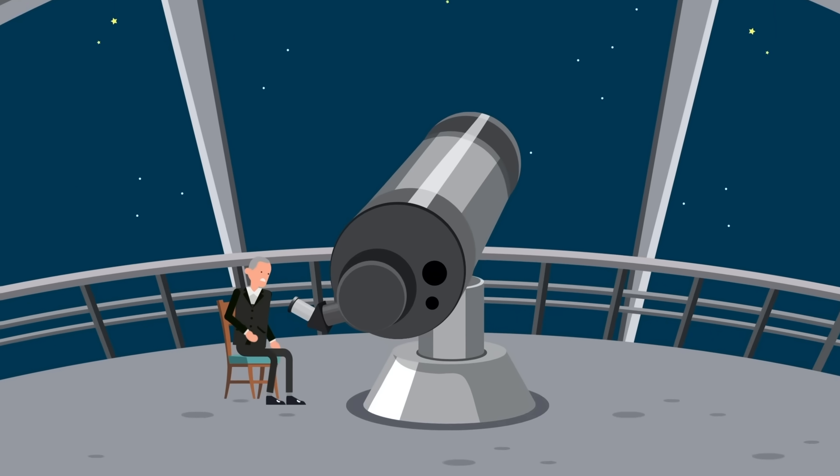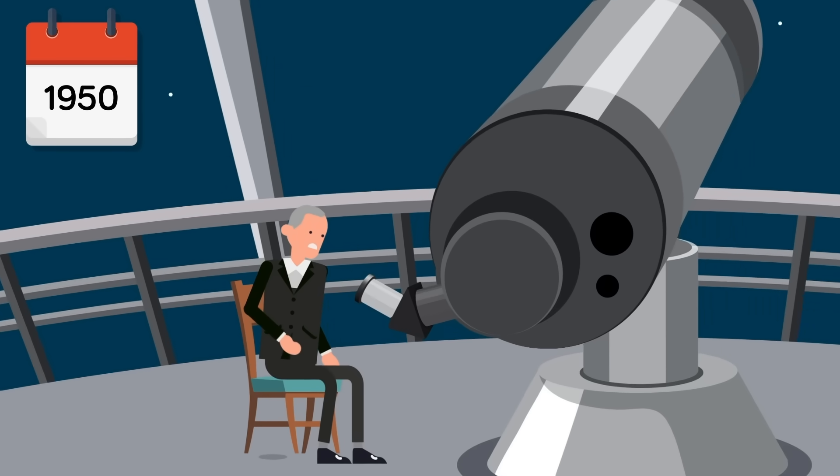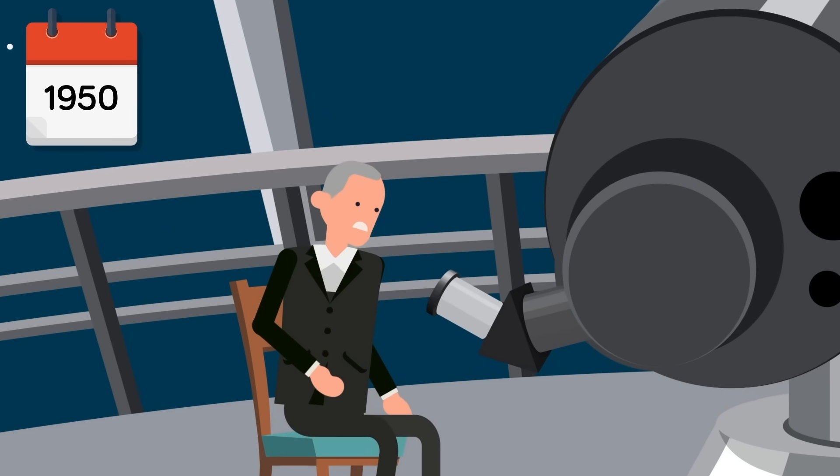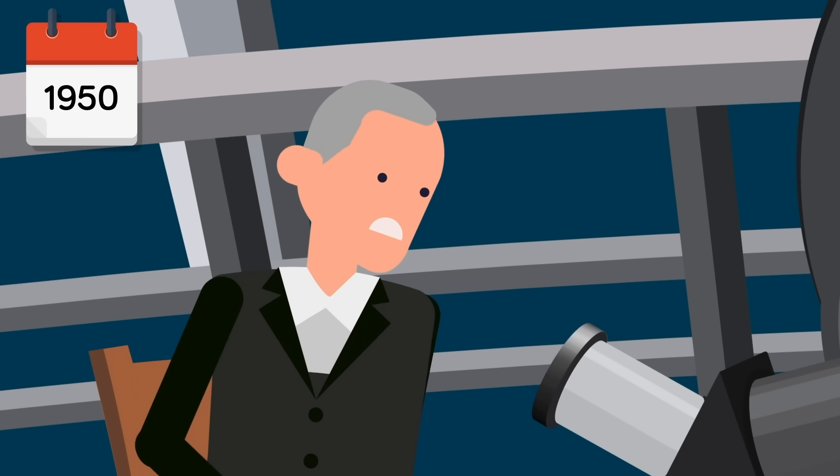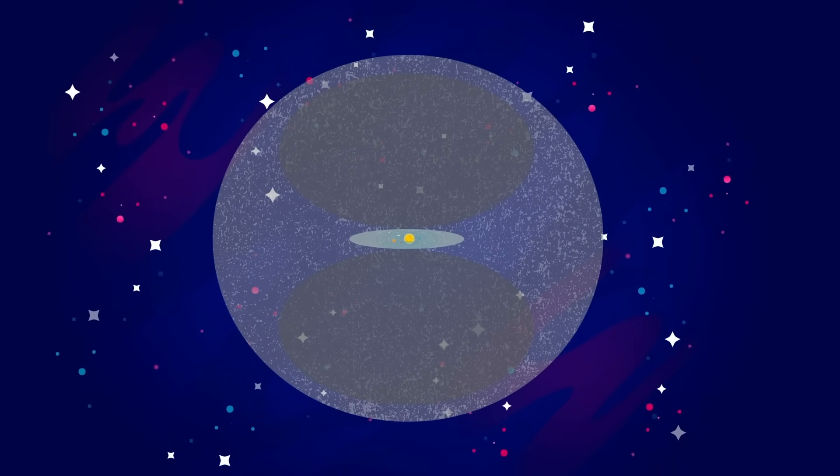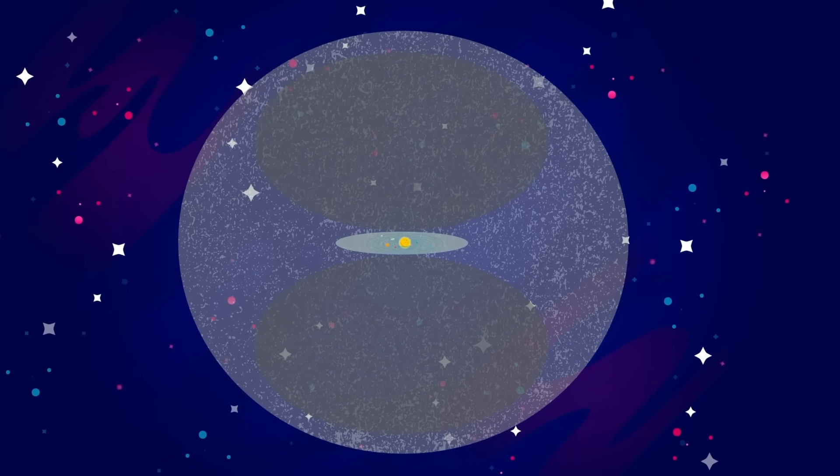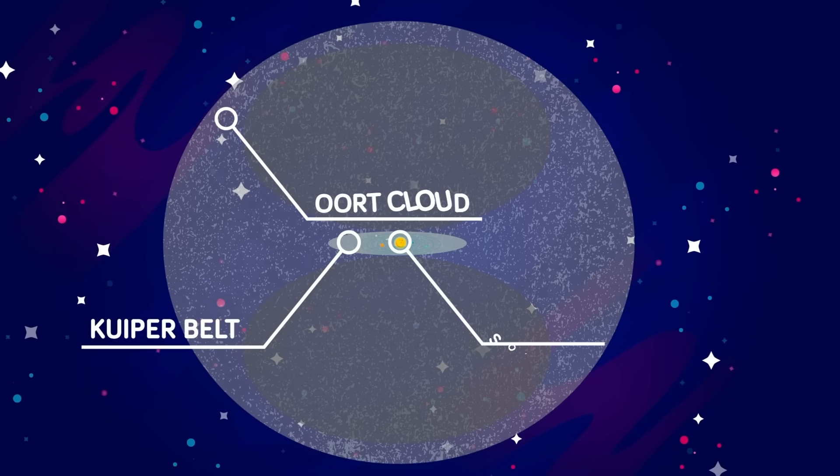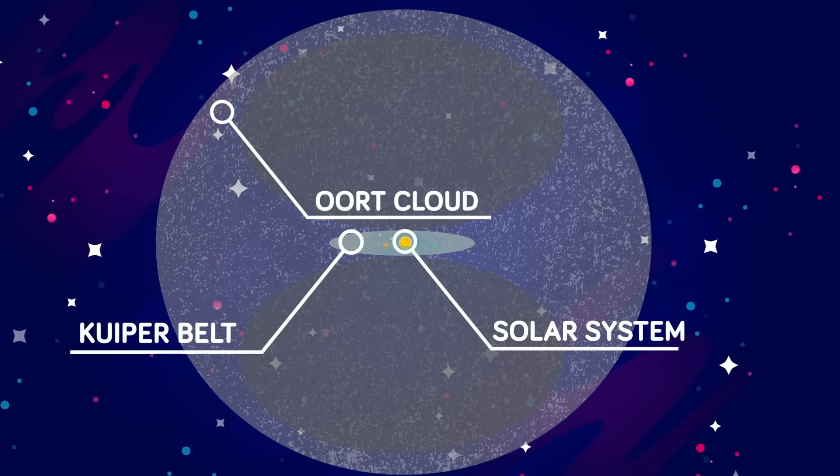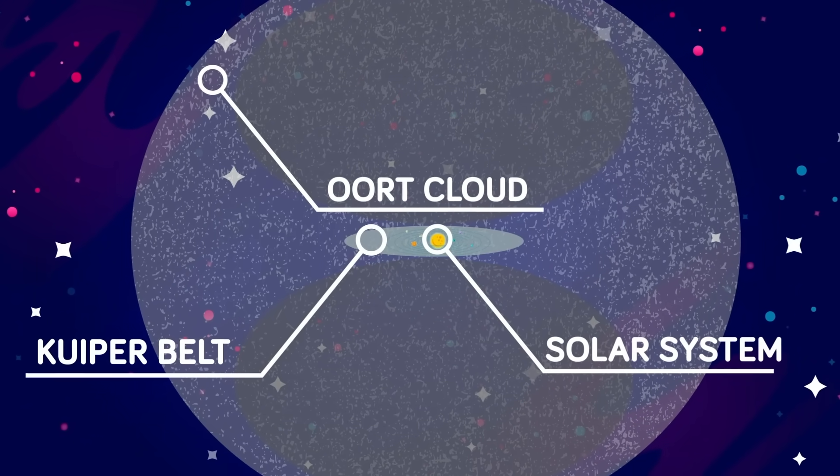The Oort cloud, first proposed by Dutch astronomer Jan Oort in 1950, is a vast cloud of icy objects that surround our solar system. It's believed that most of these objects are debris left over from the formation of the planets and the inner asteroids, flung out into deep space by the interaction of the various planetary gravitational fields.